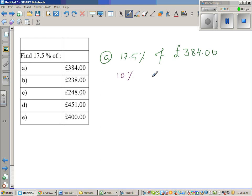to find 10%. So 10% of this is one tenth, which is £38.4. So 5%, if 10% is this, this will be half of this, so half of £38 is £19.2.